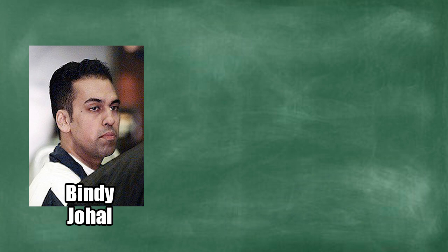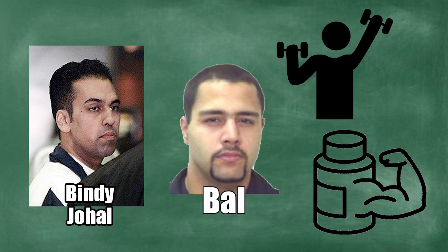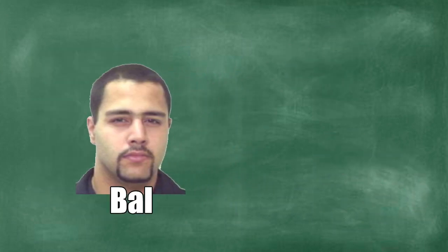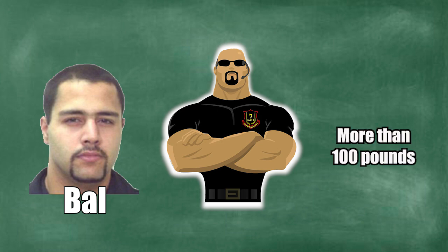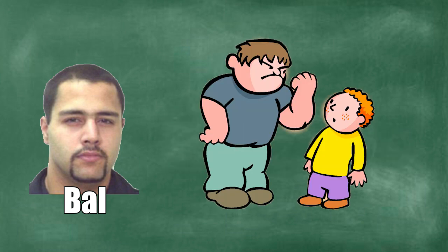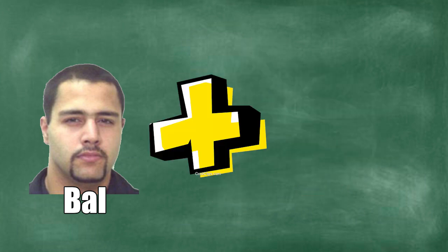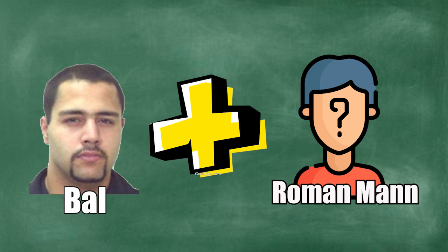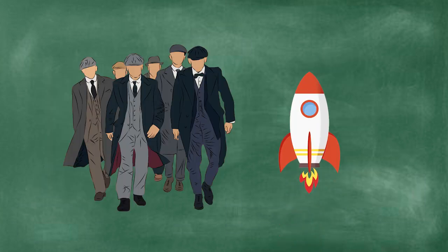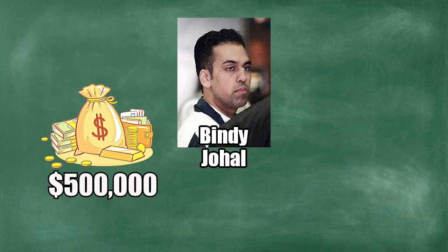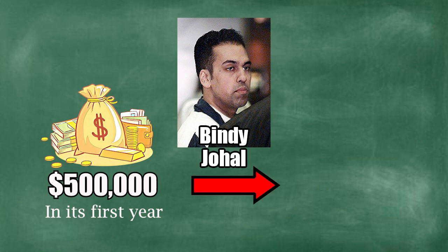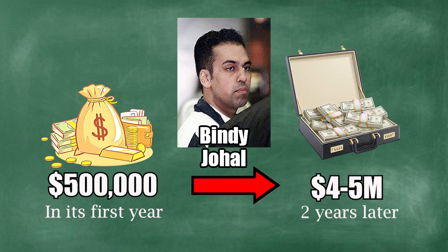It was also Bindi that took Bal to the gym and introduced him to steroids. In less than two years, Bal was bigger and packed on more than 100 pounds. According to Bal, this further helped assert his presence to those around him. With Bal and another associate named Roman Man at his side, Bindi's empire skyrocketed. Allegedly, it went from making $500,000 in its first year, to about $4 to $5 million a year, two years later.